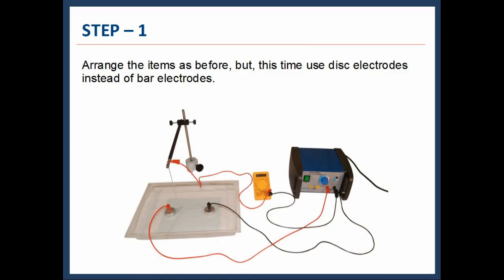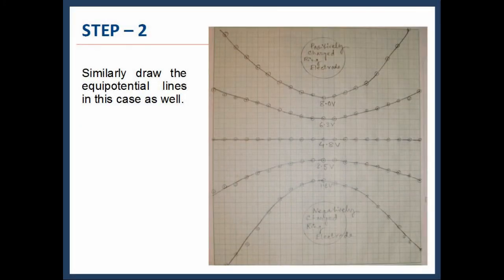Arrange the items as before, but this time use disk electrodes instead of bar electrodes. Similarly, draw the equipotential lines in this case as well.